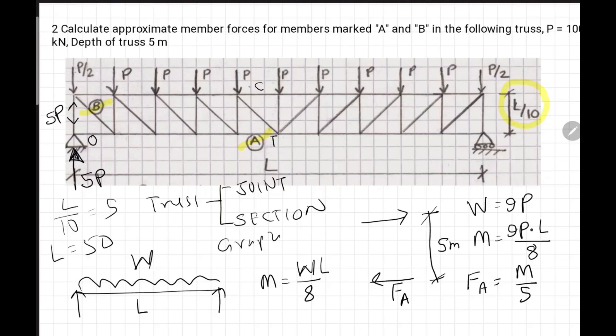For equilibrium, we will be having force in this member up, here it will be down. So we can calculate F_B. If I assume this as theta, here it will be 45 degrees. This is 5 meters and height 5 meters. So F_B cos theta equals to 4.5P.